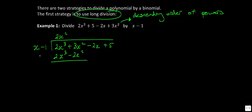Just like with regular long division, we're going to subtract. I like to put my subtraction sign with a bracket around it, because we're going to have to do two subtractions here. We have 2x cubed minus 2x cubed, which gives you nothing. And then we have 3x squared minus negative 2x squared. The reason I like the negative right there is so that it doesn't slip into the 2x squared. So 3 minus negative 2 is going to give you 5x squared.